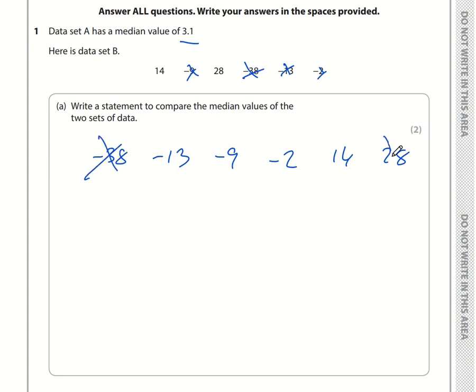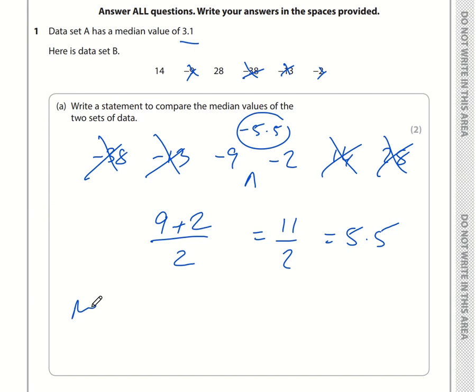For the median, I'm going to cross one off the left and the right. I can't get 1 in the middle, I've got 2 in the middle. The median is halfway between negative 9 and negative 2. Halfway between 9 and 2 is 9 plus 2 divided by 2, which is 11 divided by 2, which is 5.5. So halfway between minus 9 and minus 2 is minus 5.5. The median for set A is greater than the median for set B.